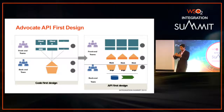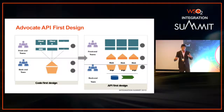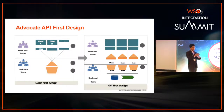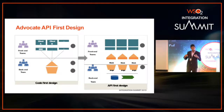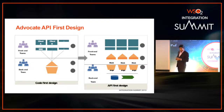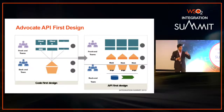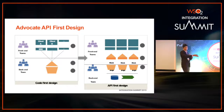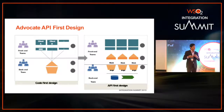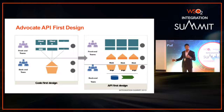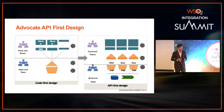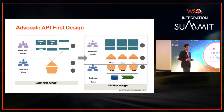An API is a contract between the consumer and the provider, so once it's defined both parties can implement their parts in parallel. There is also a mock part — if your backend is not ready yet, after you define the API you can mock the backend so that frontend people can develop their part without waiting for the backend. This is one of the main advantages of APIs and is very important in agile development.